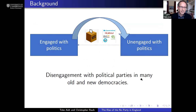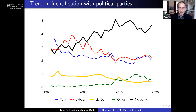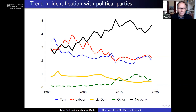Over the past three or four decades, many western democracies have experienced a process of political disengagement. One of the major manifestations is disengagement with political parties — many individuals in both old and new democracies have stopped identifying with political parties. To illustrate this, I'll use data from England. The large-scale longitudinal survey called Understanding Society has since the 1990s been asking a large representative sample of individuals in England about whether they identify with a political party or feel close to one.